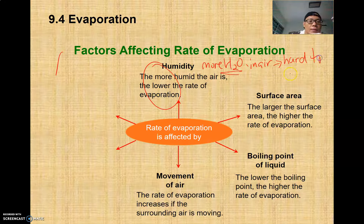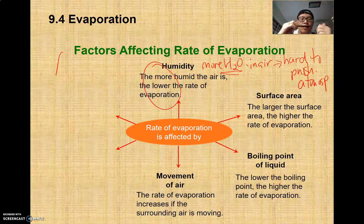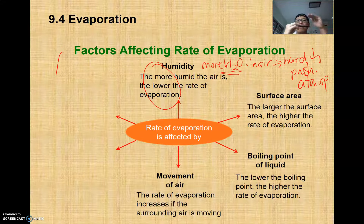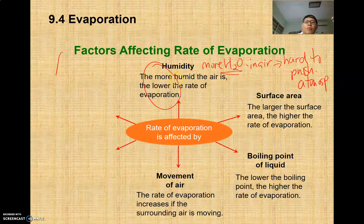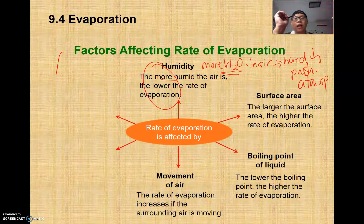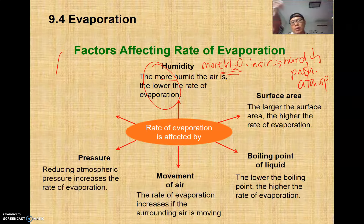For a particle at the top layer to leave, it needs energy for two actions: break intermolecular bonds and push back the atmospheric pressure. With higher humidity, the water vapour pressure in the surrounding air is higher, making it harder to push back — so evaporation is slower under high humidity. Pressure and temperature are two other factors; higher temperature means more energetic surrounding air molecules, more powerful collisions, and more energy transferred.